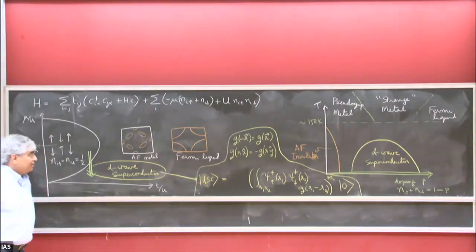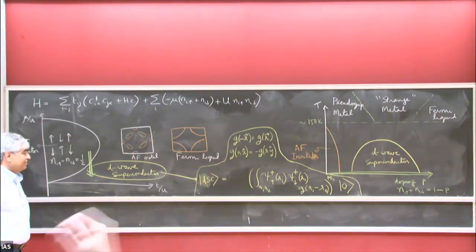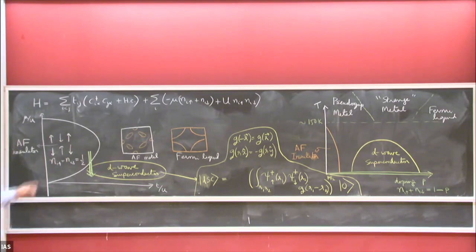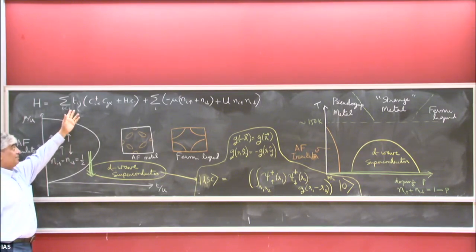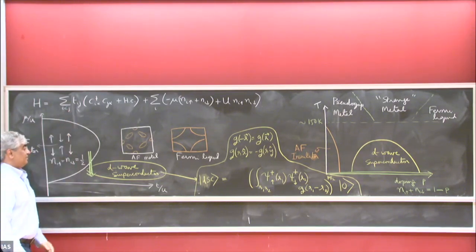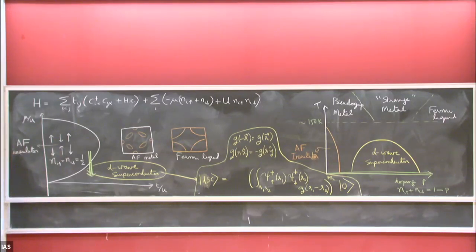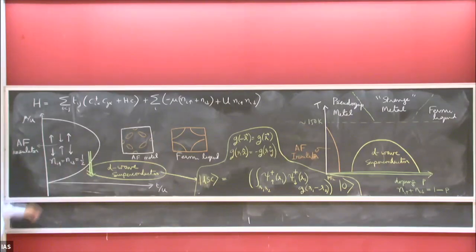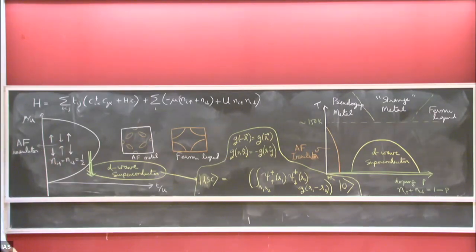I'm summarizing on the board the things covered over the past eight lectures. We're considering the Hubbard model and the phase diagram we've been sketching. At very large U and half filling, with n_i_up and n_i_down each equal to one half, we know it has the antiferromagnetic ground state: an insulator with broken spin rotational symmetry.